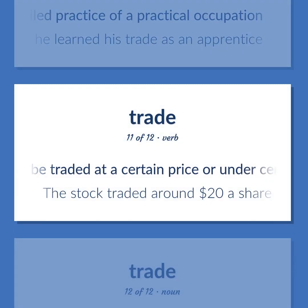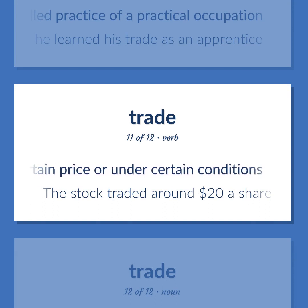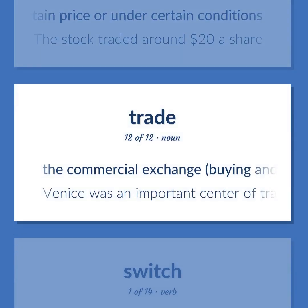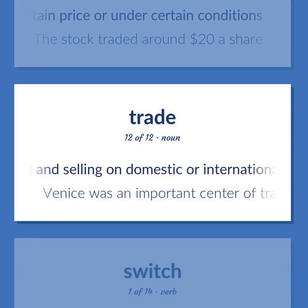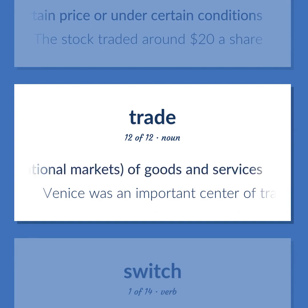Trade: be traded at a certain price or under certain conditions — the stock traded around $20 a share. The commercial exchange: buying and selling on domestic or international markets of goods and services — Venice was an important center of trade with the east.